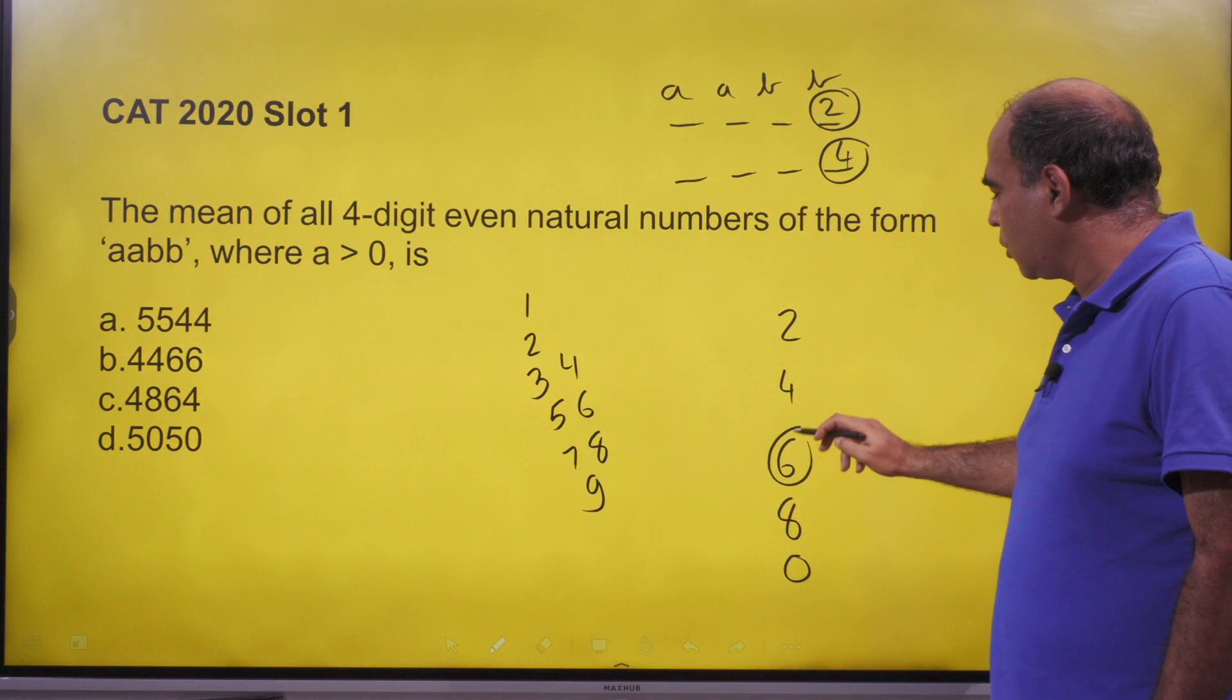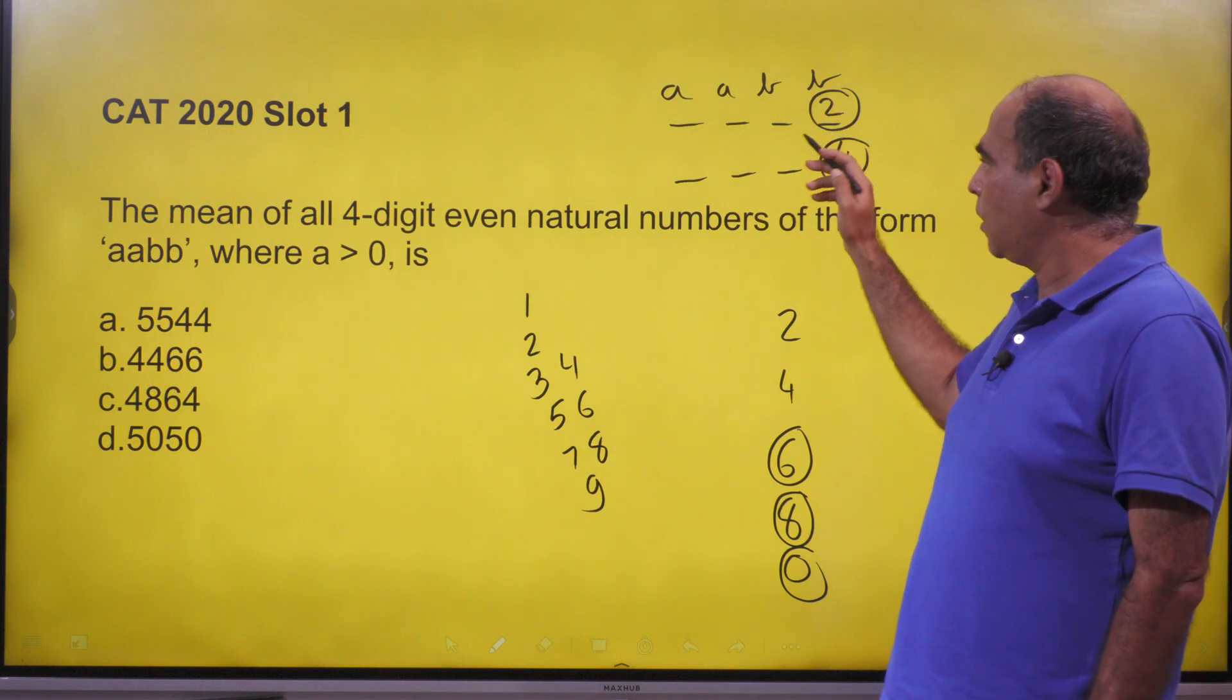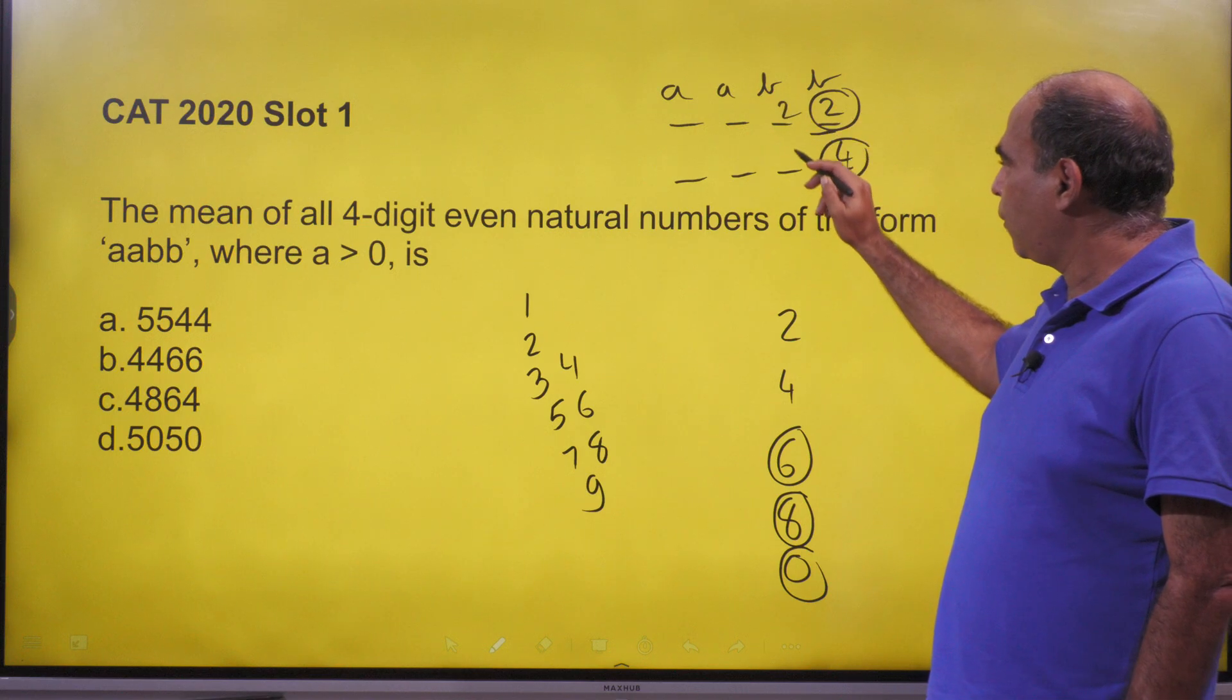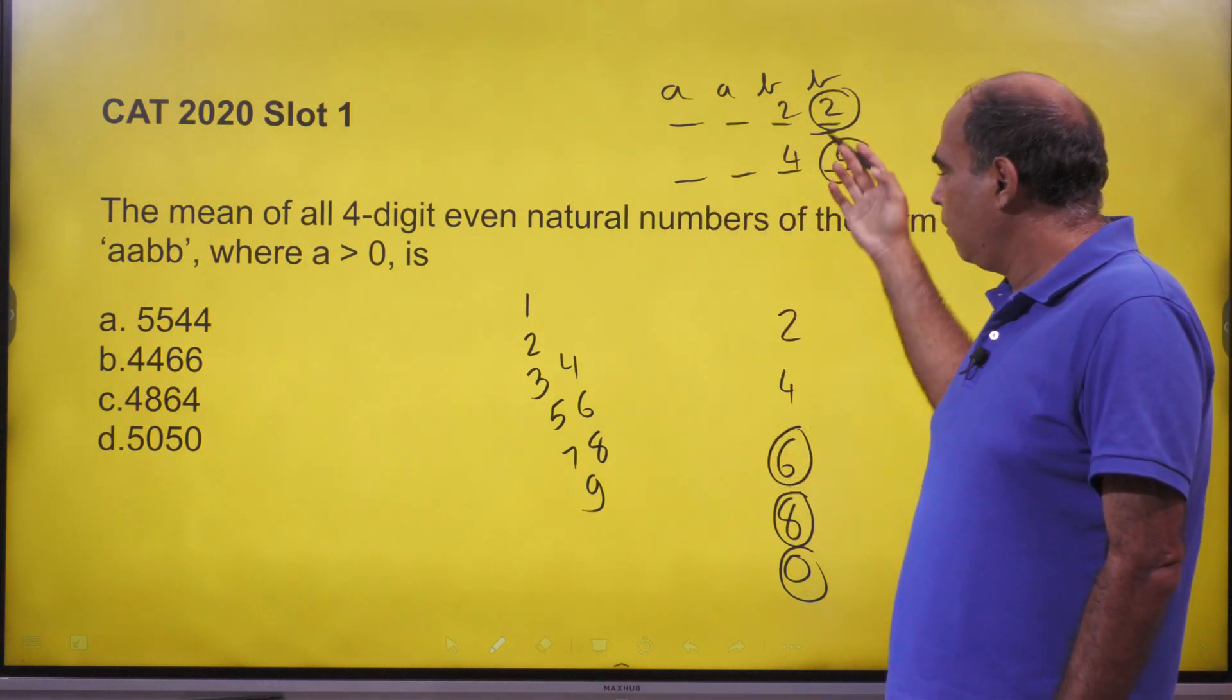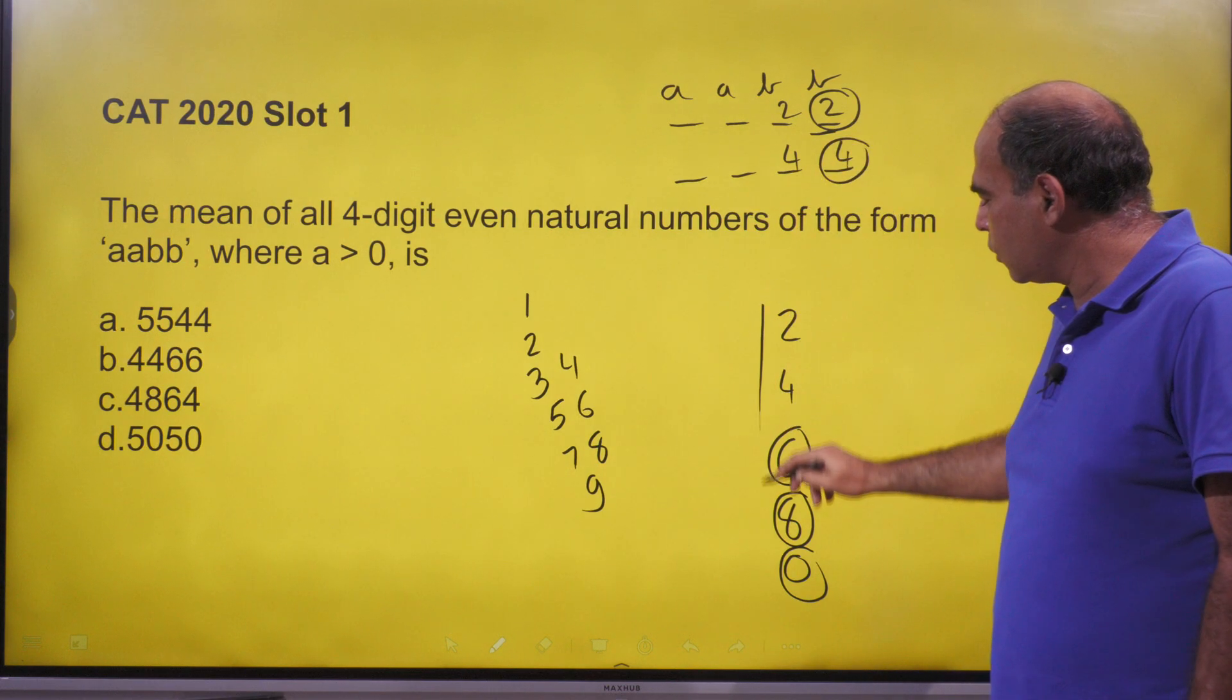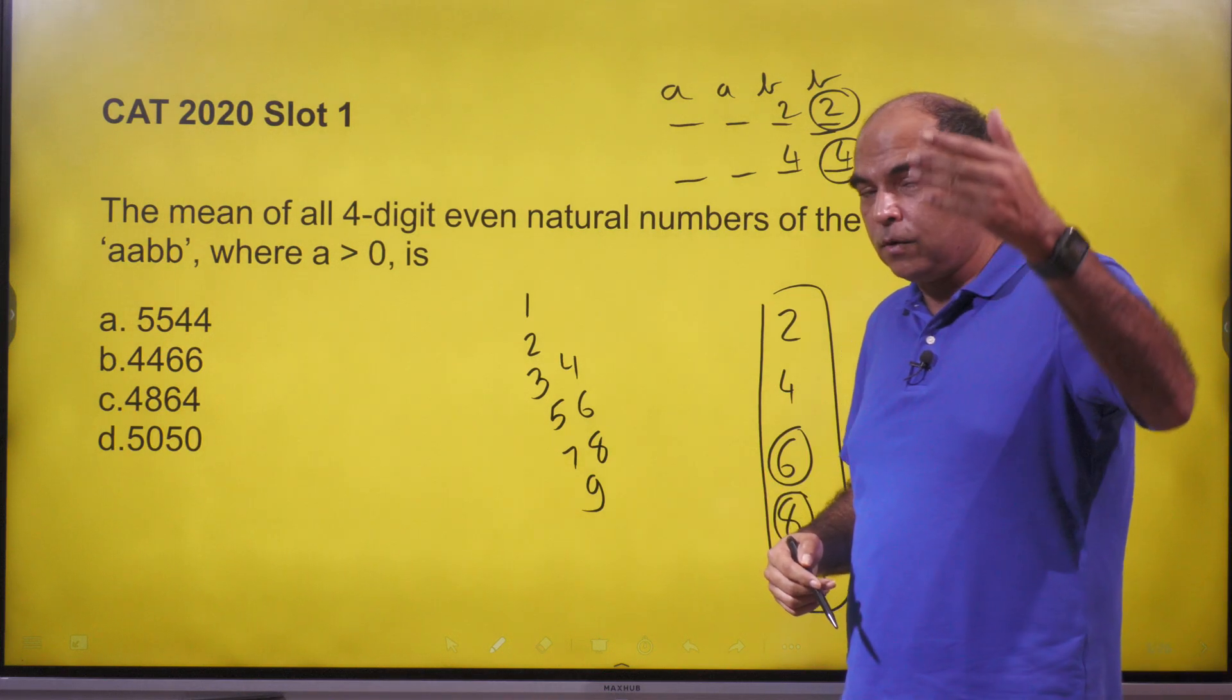That means the number of numbers I'll be able to make with a 22 ending and a 44 ending, since bb is repeated here, will be equal. So what's going to happen in the last digit is that the last digit is going to be equally shared between 2, 4, 6, 8, 0. So if I want to find the average of the last digits, if I write 2, 4, 6, 8, 0 once each, the sum will be 20 and the average will be 4.